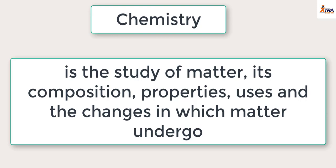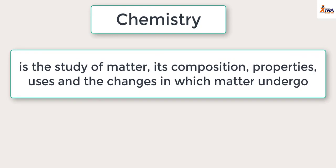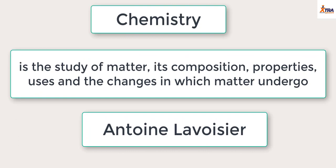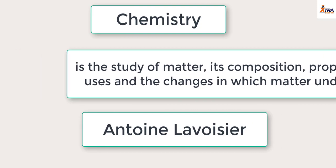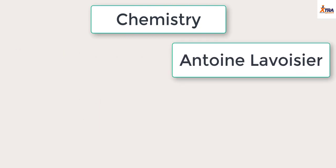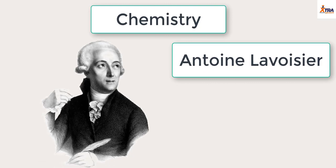Today, we call Antoine Lavoisier the father of chemistry. Lavoisier was a French chemist who happened to be one of the major chemists to bring revolution to the world of science and chemistry. He brought new concepts to chemistry — from the discovery of oxygen to certain fundamental laws of chemistry. Lavoisier, being the first chemist to start major work on chemistry and help modernize it, we call him today the father of modern chemistry.